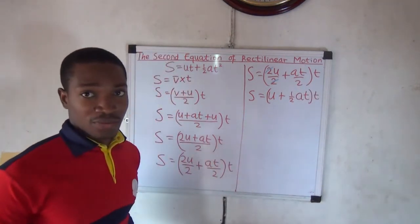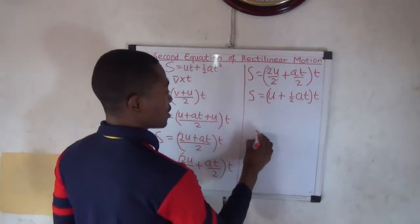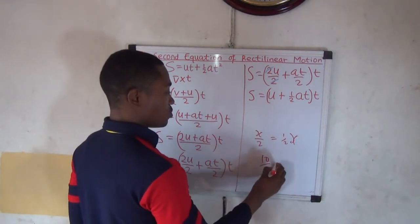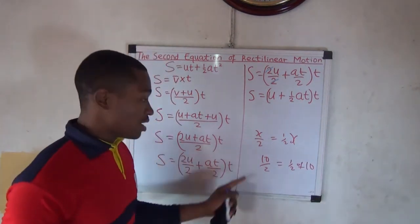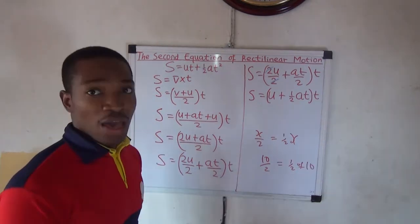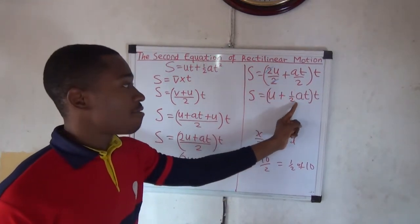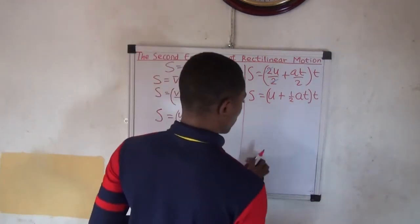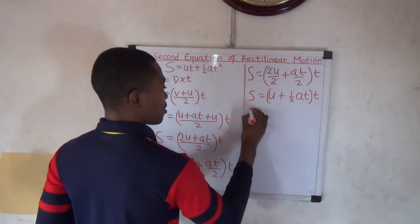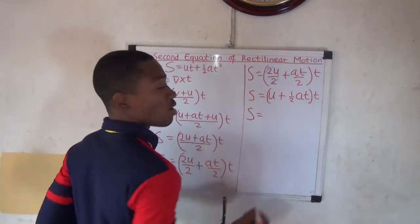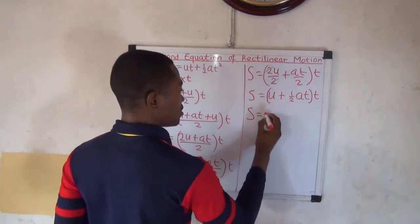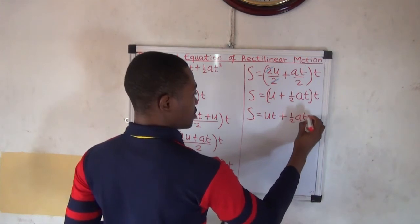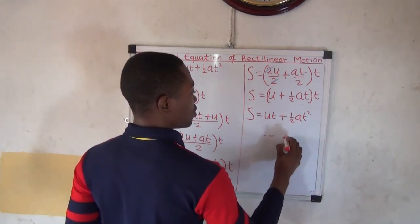Note that AT divided by 2 is the same as half AT — just as 10 divided by 2 equals half of 10, which is 5. Expanding the brackets: S equals U multiplied by T plus half AT multiplied by T, which gives S equals UT plus half AT squared. This is the second equation of rectilinear motion.